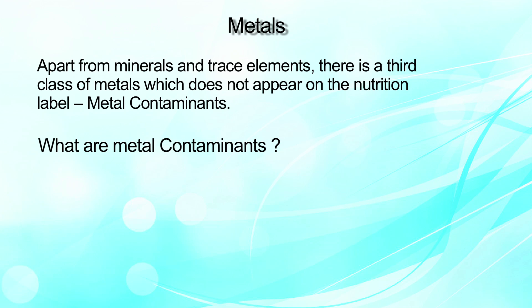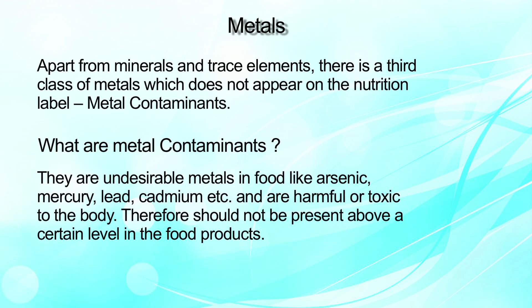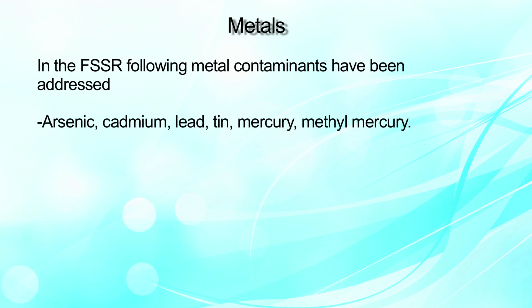What are these metal contaminants? They are undesirable metals in food like arsenic, mercury, lead, and cadmium, and are harmful to the body, therefore should not be present above a certain level in food products. In the FSSR, the following metal contaminants have been addressed: arsenic, cadmium, lead, tin, mercury, and methylmercury.